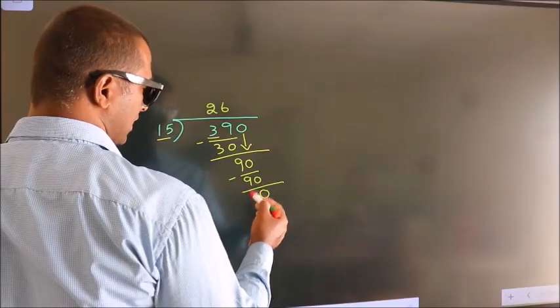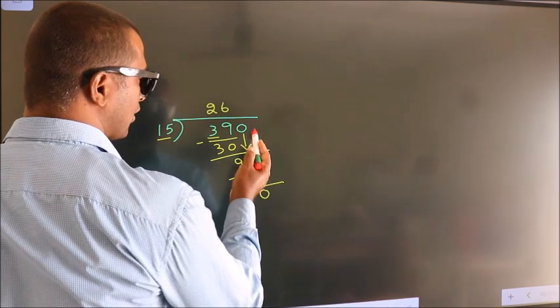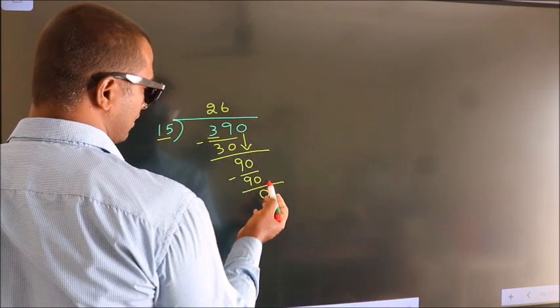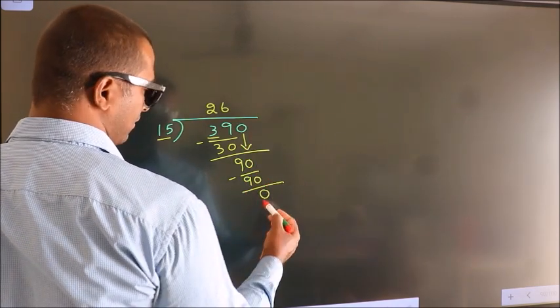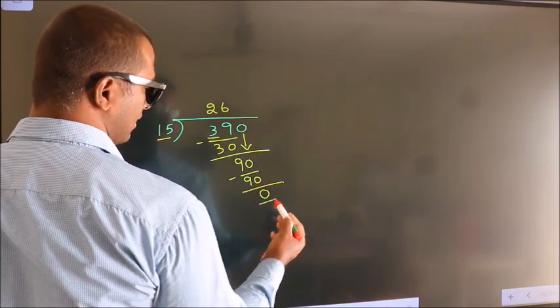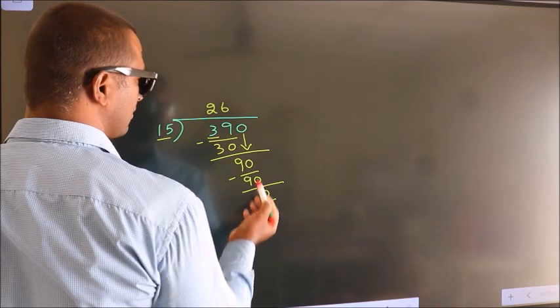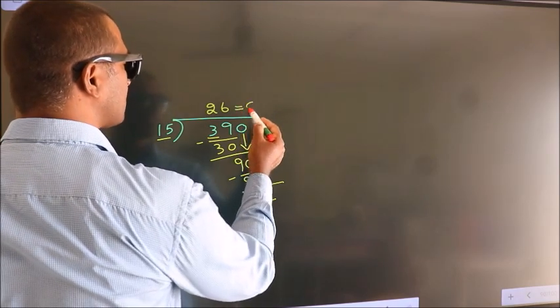After this, there are no more numbers to bring down, and we got remainder 0. So this is our quotient.